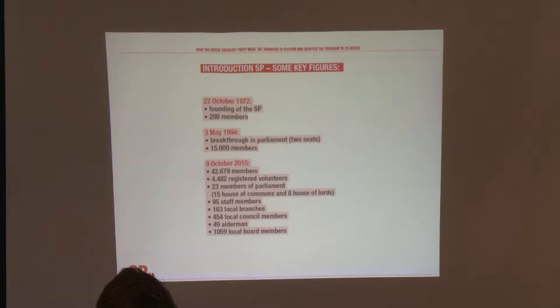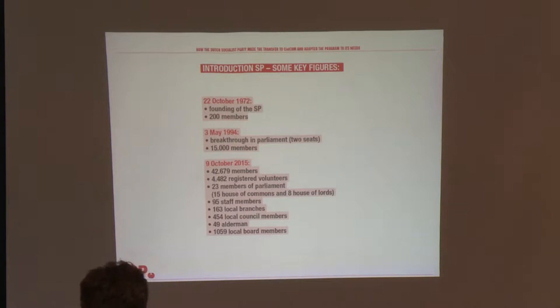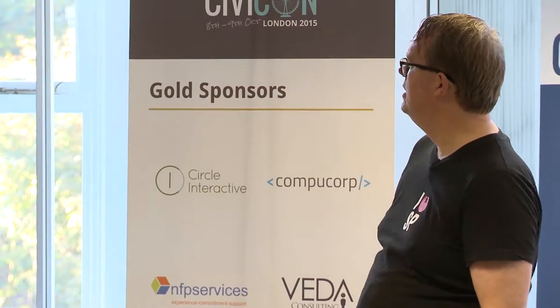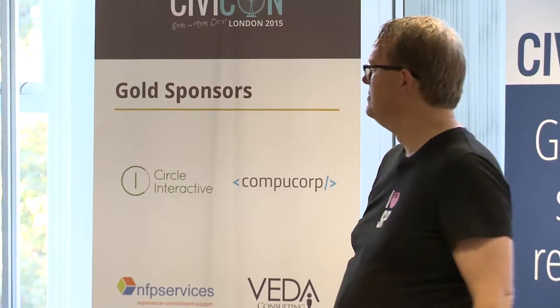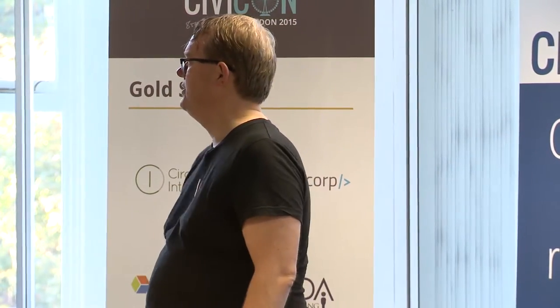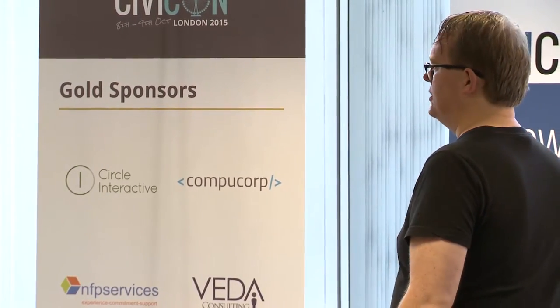A very short introduction about the Socialist Party — we're not here to talk politics, although I could do that for hours, but this is about software. The Socialist Party was founded in 1972 with about 200 members, and everything was done on paper. On the 3rd of May 1994, we had our major breakthrough in parliament with two seats, and around that time we had about 15,000 members. We started to centralize administration and for the first time really used computers for administration.